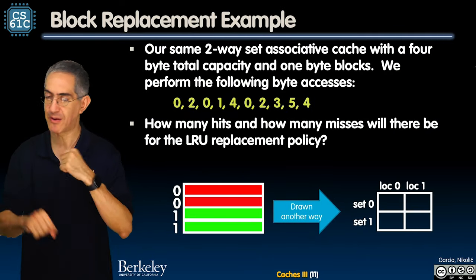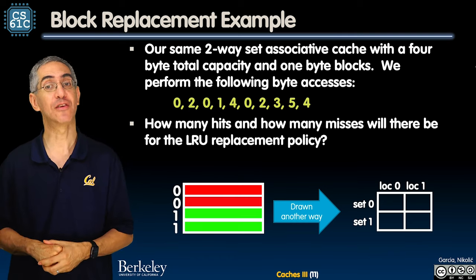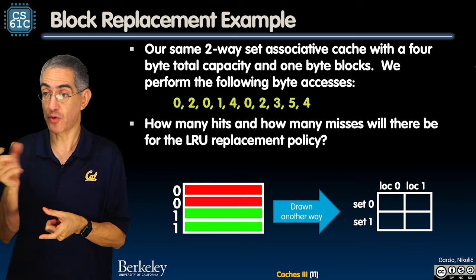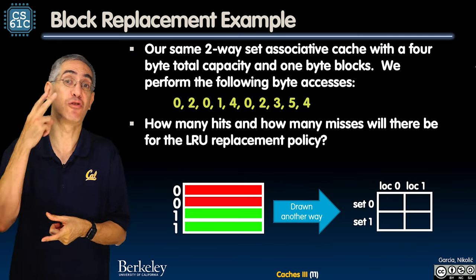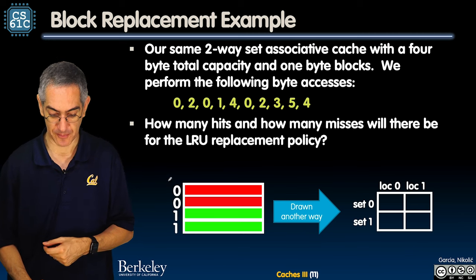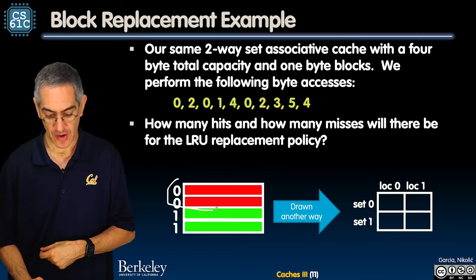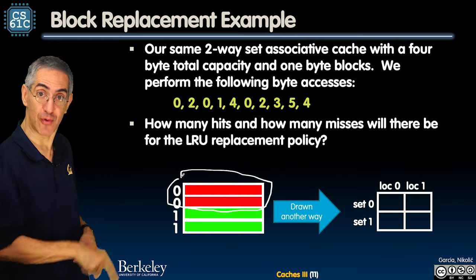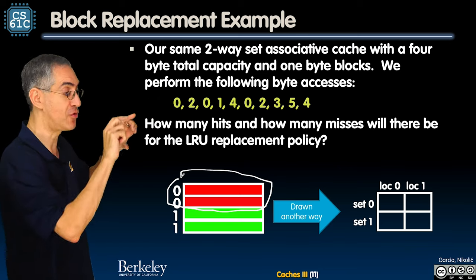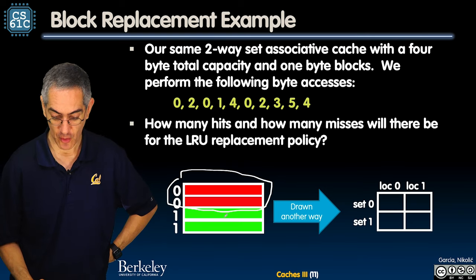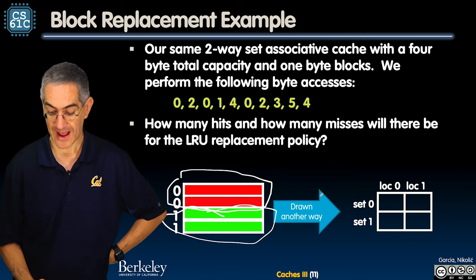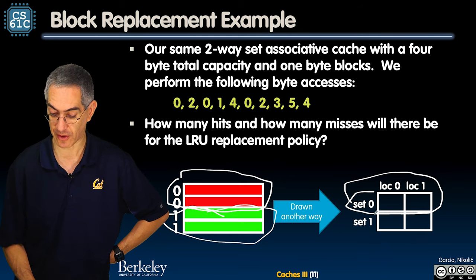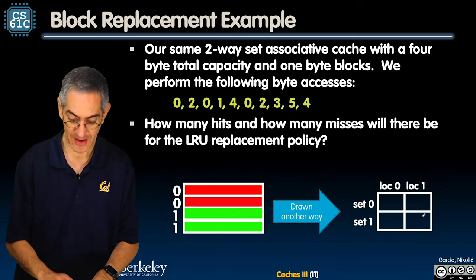Let's look at an actual example to ground this. We have a two-way set associative cache, four bytes total, one-byte blocks — very small. Two-way means two rows per set. Here's the picture: all the even-numbered memory addresses go into the top set (red), and all the odd-numbered memory addresses go into the bottom set (green). So even accesses go to set zero, odd accesses go to set one.